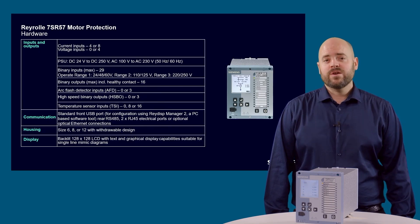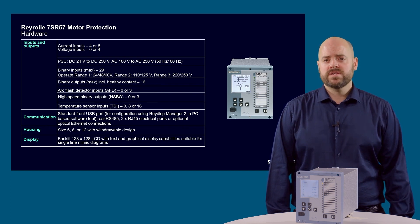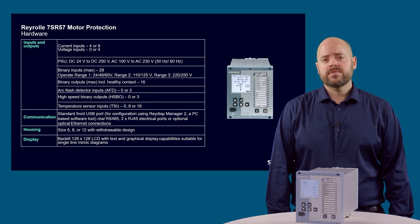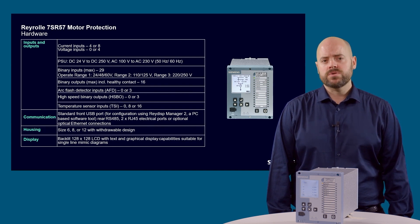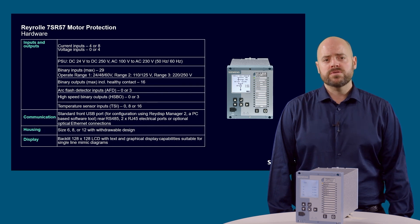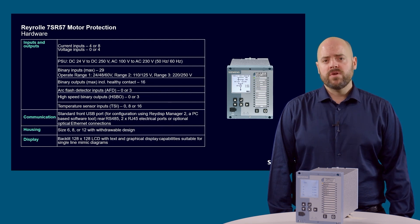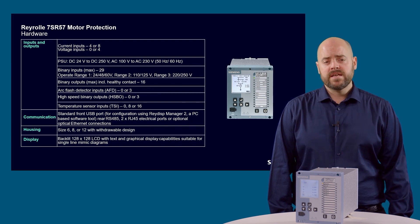Now let's take a closer look at the hardware. 7SR5710 motor devices have 4 CT inputs, and 7SR5711 and 7SR5721 motor devices have 4 or 8 CT inputs and 4 VT inputs. A single power supply covering all substation auxiliary voltage supply levels is used — no separate ordering options are necessary. The binary inputs have selectable operating levels and each binary input can be configured individually if required. There are optional arc flash detector inputs, high-speed binary outputs and temperature sensor inputs.